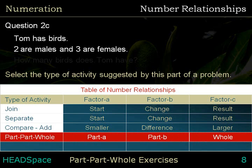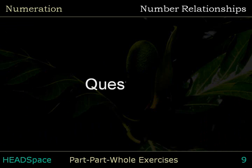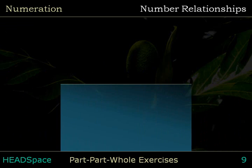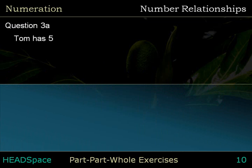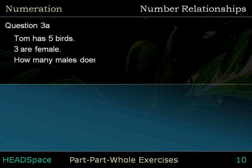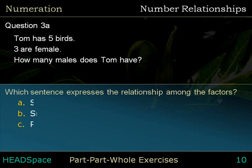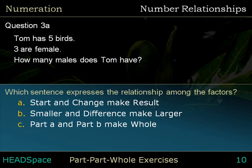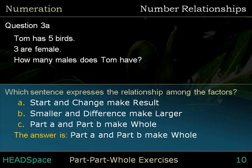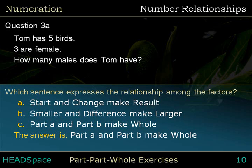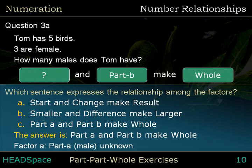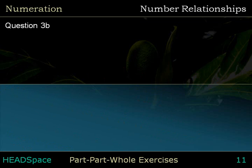Question 3, Question 3a. Tom has 5 birds. 3 are female. How many males does Tom have? Which sentence expresses the relationship among the factors? The answer is: Part A and Part B make the whole. Part A is unknown.